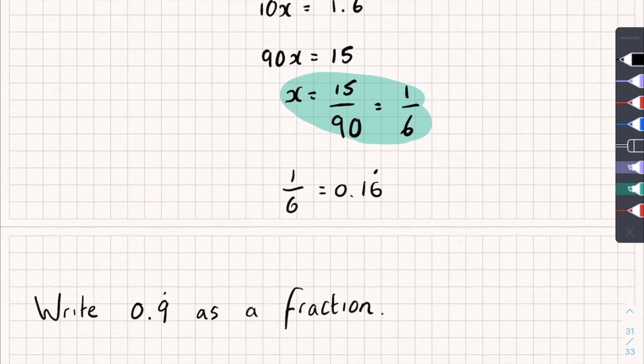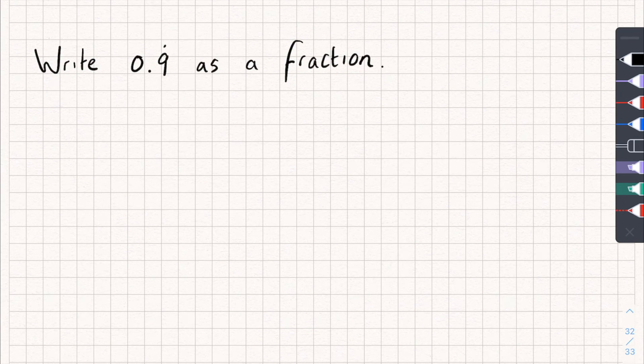Now, if you want to try something quite interesting, you can try and write 0.9 recurring as a fraction and see what happens. And that's it for this video. Thanks for watching. Subscribe to my channel for more tutorials. Go over to my TikTok, which is in the description, for more worked exam questions. Thanks for watching.